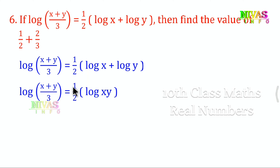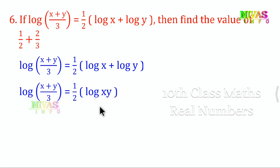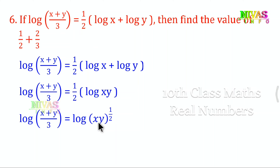Now we have log xy. If we have 1 by 2, we can transfer it to the right side as an exponent. So log (x plus y) by 3 is equal to log (xy) whole to the power 1 by 2, which means (x plus y) by 3 is equal to root xy.